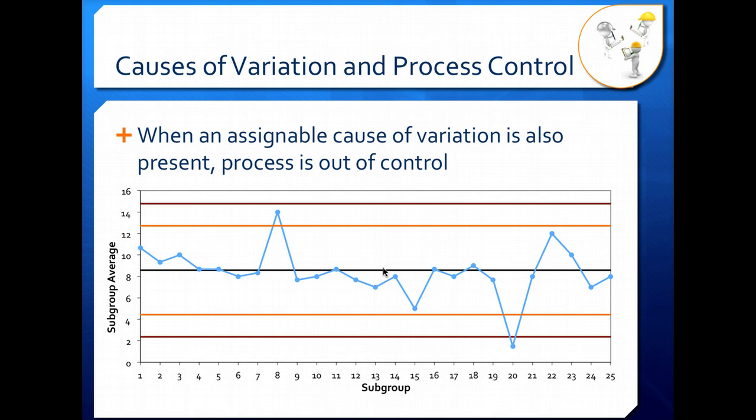When you have some kind of assignable cause of variation, we call that out of control. So these points here that are outside our warning limit and outside our action limit, and maybe even this point here and this point here because they're sort of close to our warning lines, those most likely have some kind of assignable cause that caused our process to deviate away from the average. So this is how we start to use control charts with our other process data to say, okay, this point here is clearly out of control. We need to figure out what happened when we were taking that data to figure out what's causing this variation in our process and how to bring our process back into control and get all of our points clustered around our average.